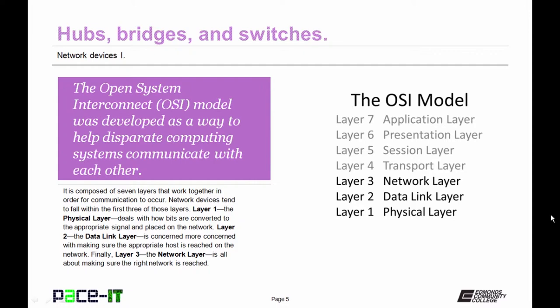Layer 1, the physical layer, deals with how bits are converted to the appropriate signal and placed onto the network. Layer 2, the data link layer, is more concerned with making sure that the appropriate host is reached on the network. And finally, there's layer 3, the network layer, which is all about making sure that the right network is reached. Network devices can usually be classified by where they fall in the OSI model.